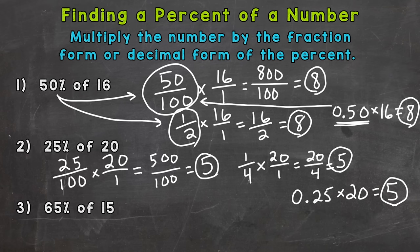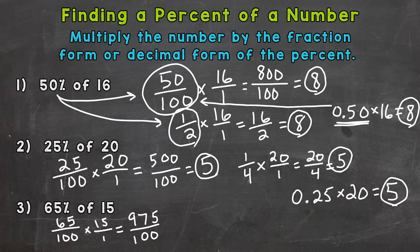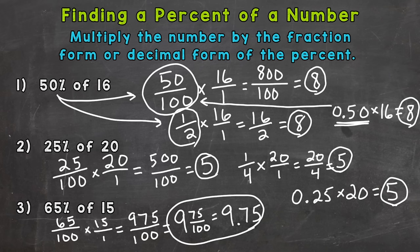Lastly, number 3: 65 percent of 15. To convert a percent to fractional form, put it over 100, so 65 over 100 times 15. Multiplying straight across gives 975 over 100. Converting from that improper fraction: how many whole groups of 100 are in 975? That's 9, with 75 left over, so 9 and 75 hundredths. We can also multiply by the decimal form of 65 percent, which is 0.65, times 15, and we get the same answer: 9.75.